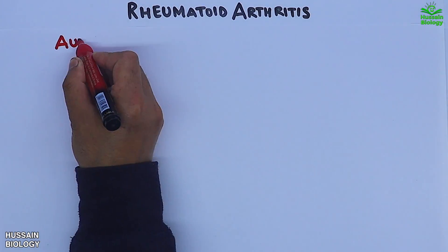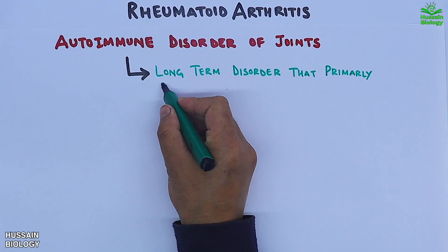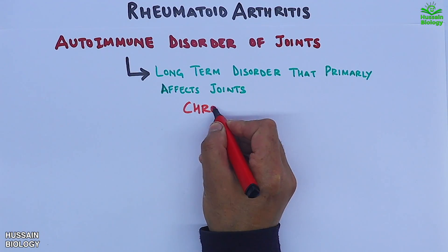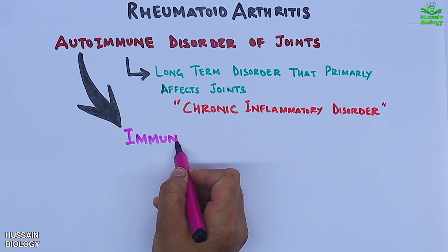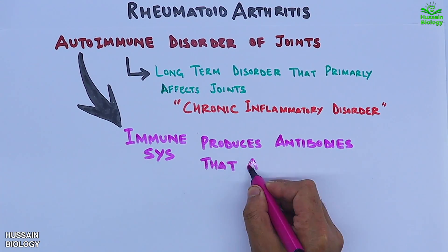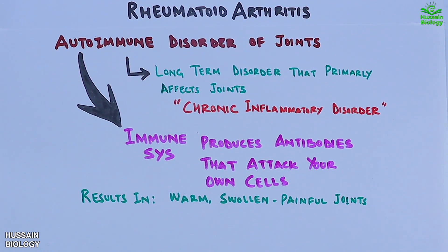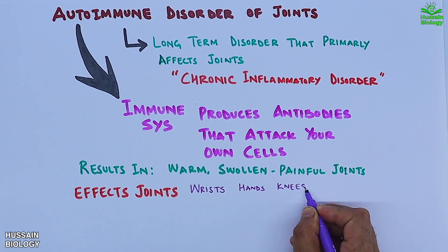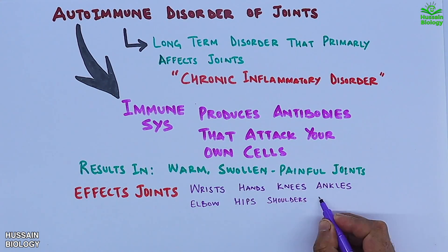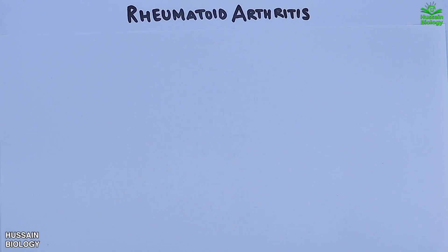Rheumatoid arthritis is an autoimmune disorder of joints — a long-term chronic inflammatory disorder. The autoimmune aspect refers to the immune system producing antibodies that attack your own cells, resulting in warm, swollen, and painful joints. It affects joints including the wrists, hands, knees, ankles, elbows, hips, shoulders, and cervical spine.